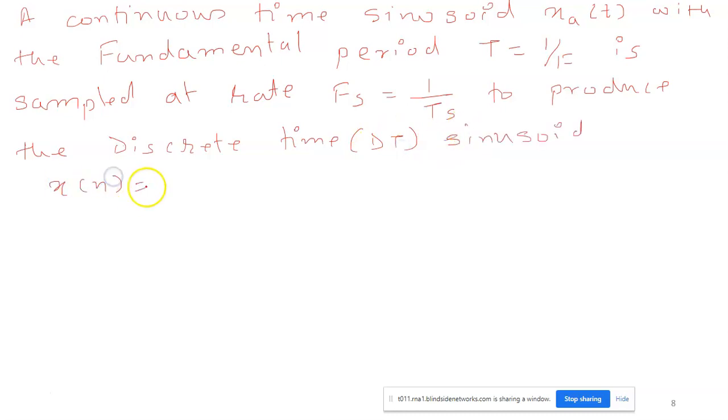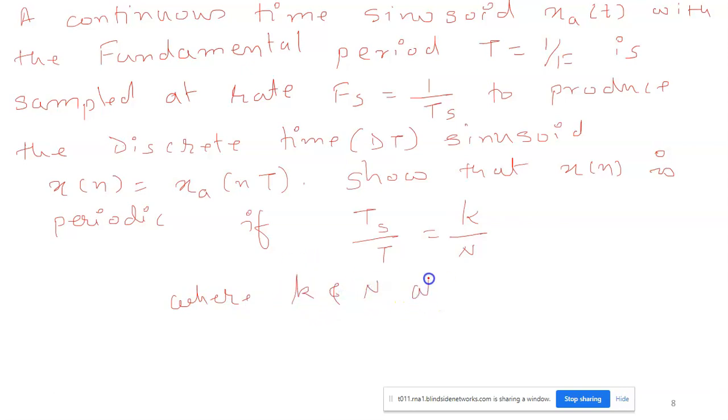The sinusoid xN equals xA of nt. We need to show that xN is periodic if Ts by T equals k by N, where k and N are integers.